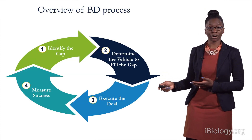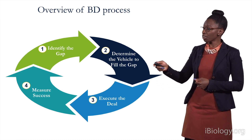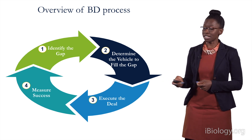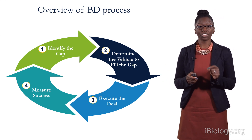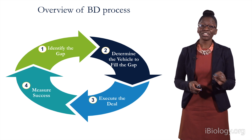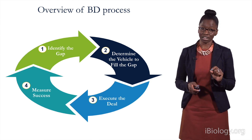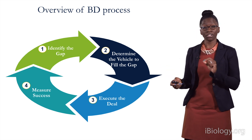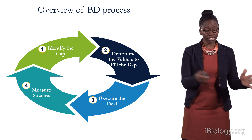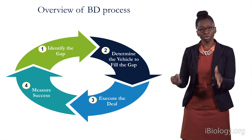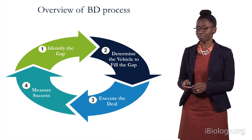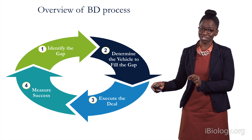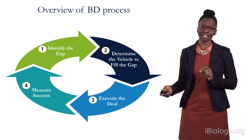This is an overview of the entire BD process, and I'll walk you through these four different steps over the next several slides. The first step is to identify the gap. To make sure that you have a successful business strategy, you need to know what you're solving for from the very beginning. Number two, determine the vehicle that you're going to use to fill this gap — you know what the gap is, how are you going to actually fill it? There are a number of vehicles that you can use, and we'll discuss those. Once you determine the gap and the vehicle, then it's all about execution — step number three is all about executing the deal.